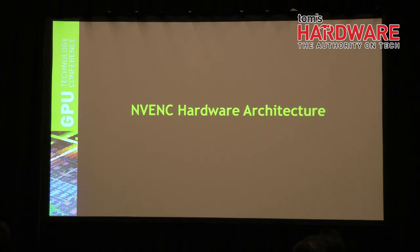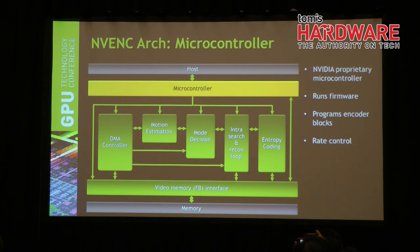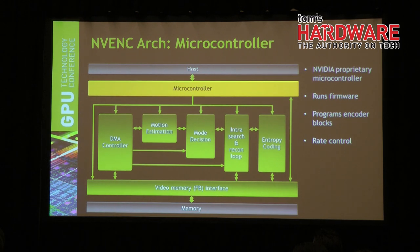This is the basic block diagram of the NVENC hardware architecture. The yellow block is the front end of the encoder. It runs the rate control algorithm and programs all the NVENC submodules. It runs a proprietary firmware, handles all interrupts and context switches, and adds flexibility to encoding — for example, you can change encoding config parameters at various slice levels and macroblock levels.